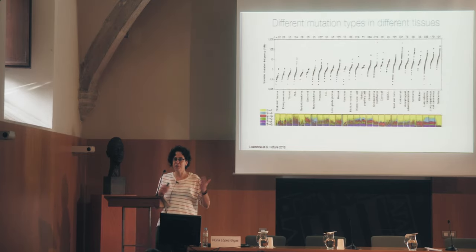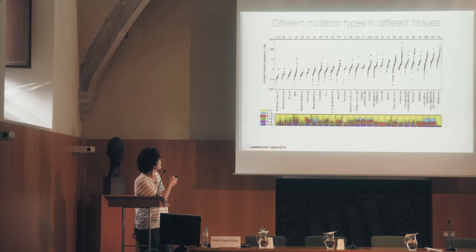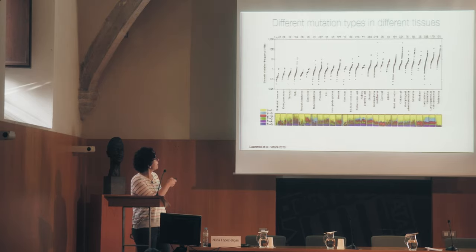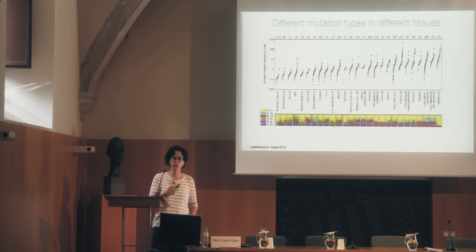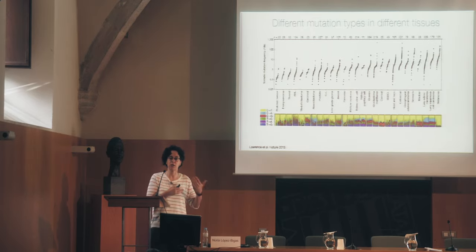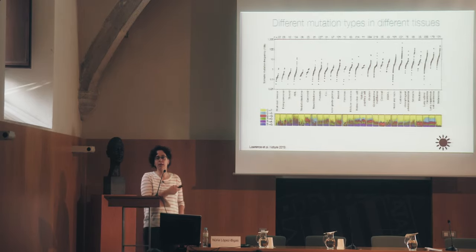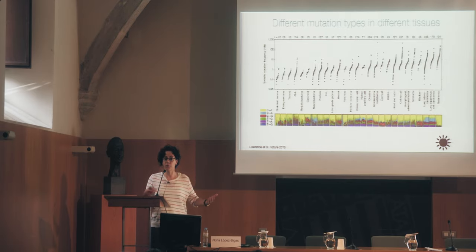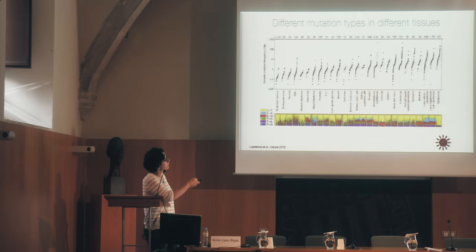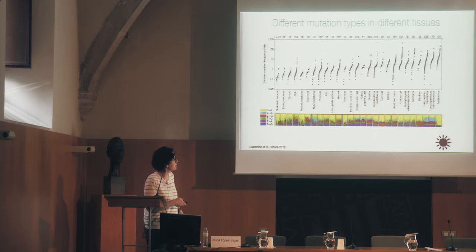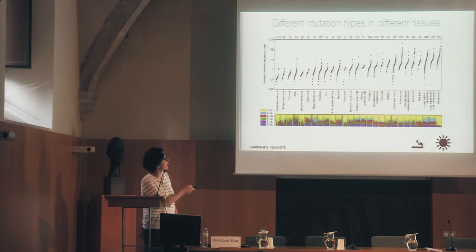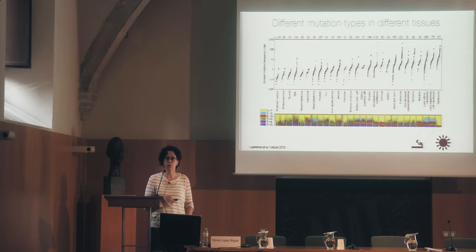Here is one of the classical images of cancer genomics where you see the number of mutations or the mutation rate. But in addition to the number of mutations, it's important to see the type of mutations — if the mutations are C to T or a G changing to an A. These are represented here in colors. We can quickly see that different tissues have a different type of mutations. This is melanoma — mostly C to T.